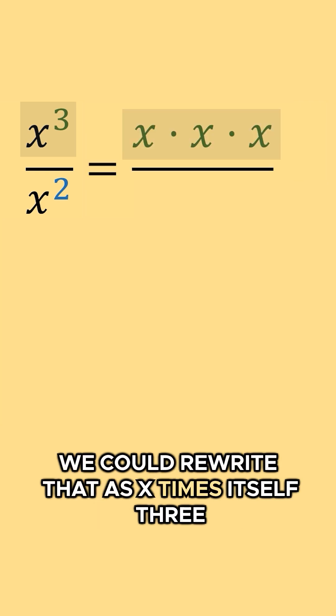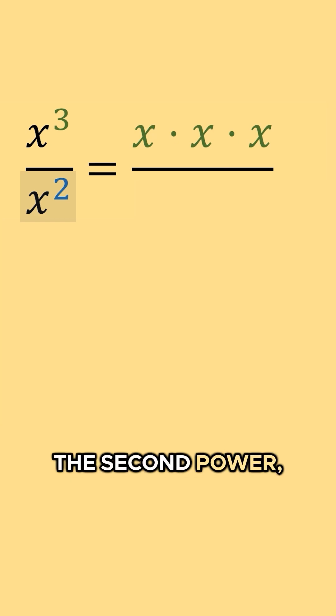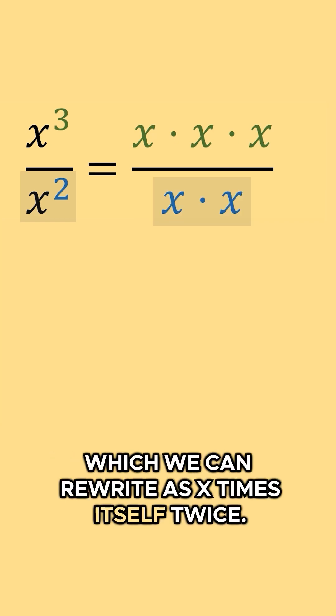we could rewrite that as x times itself three times. In the denominator, we have x to the second power, which we can rewrite as x times itself twice.